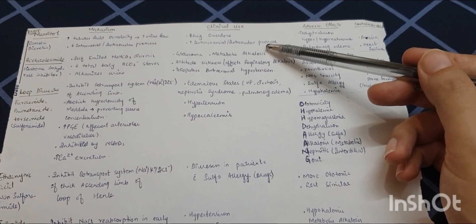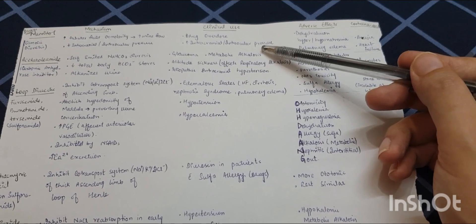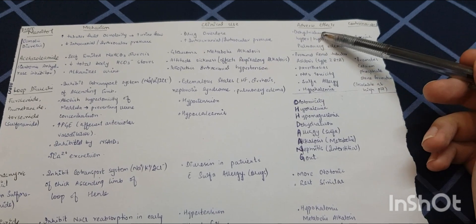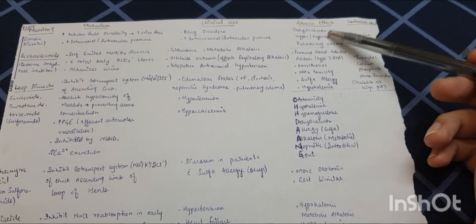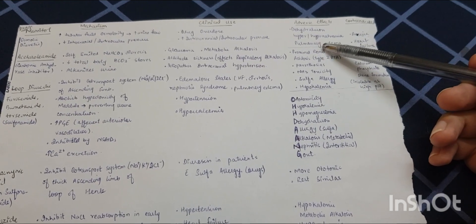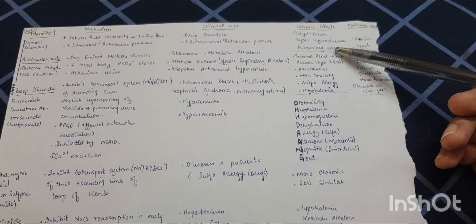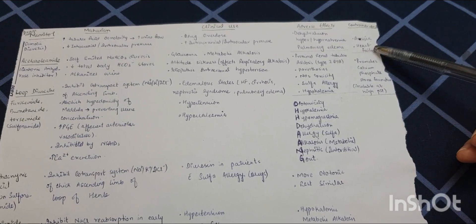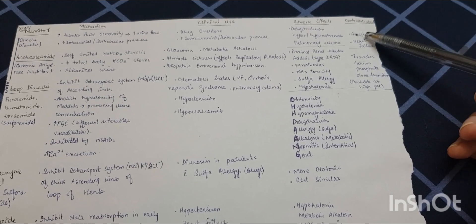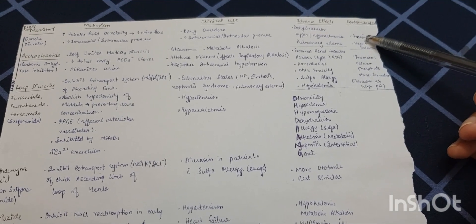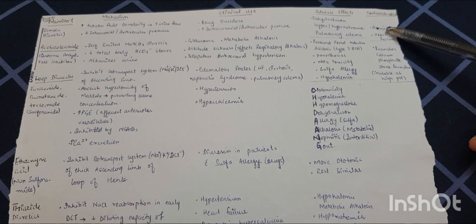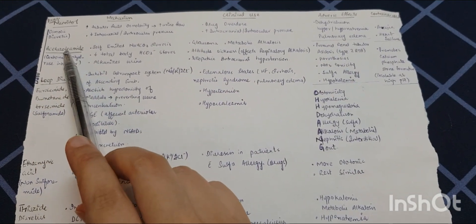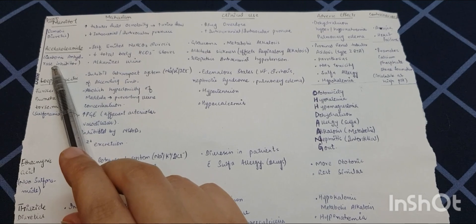Mannitol's adverse effects include dehydration, hypernatremia and hyponatremia (both can occur), and pulmonary edema. It is contraindicated in pulmonary edema occurring in heart failure, and in anuria — because if there is no urine, there is no way for mannitol to carry water out of the body.